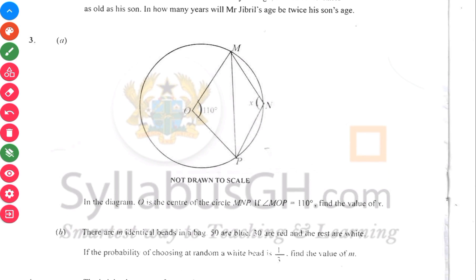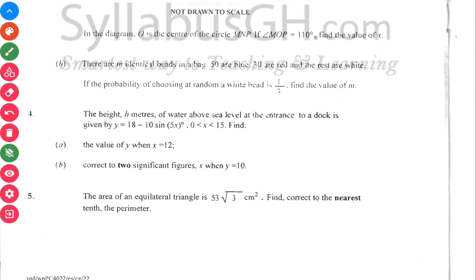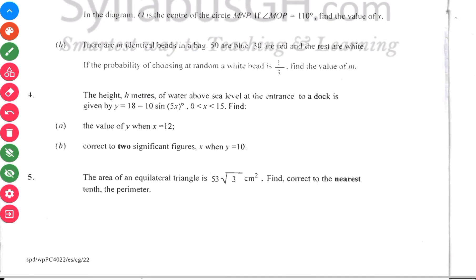Number three here is a power topic — circle theory. I mentioned in one video that if you don't know circle theory, don't write the paper. Just go and learn how to do it, just go and master it. Number three here also has to do with probability, which is a topic I mentioned in my video on topics to expect in 2023. Number four also has to do with trigonometry.